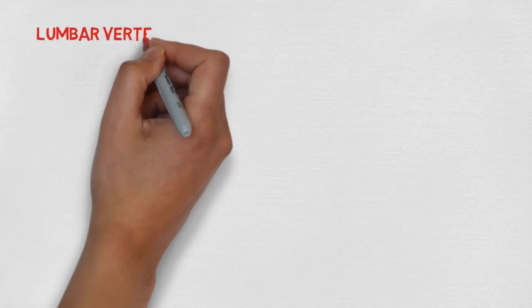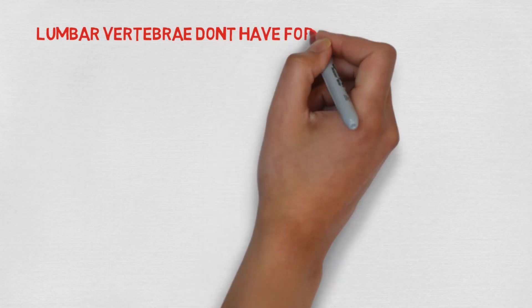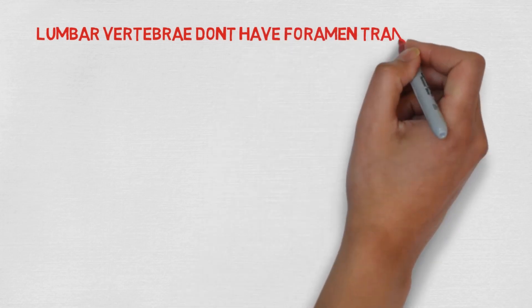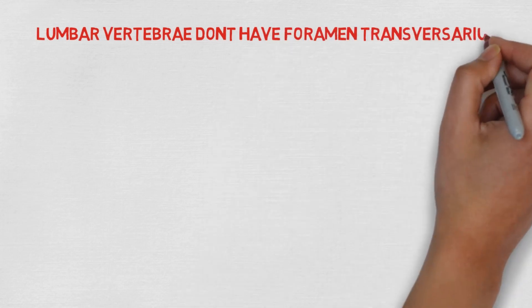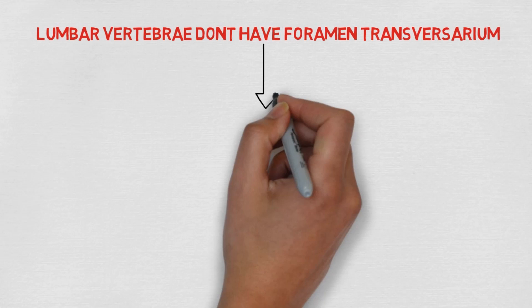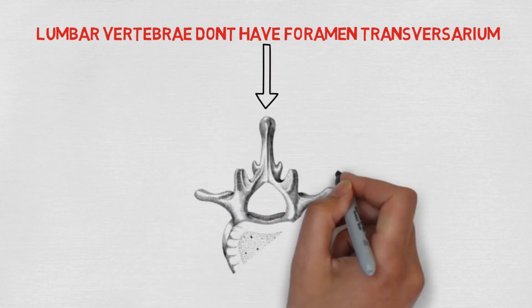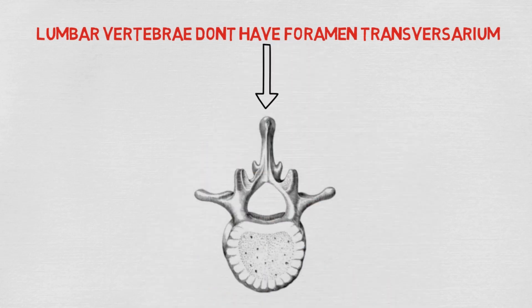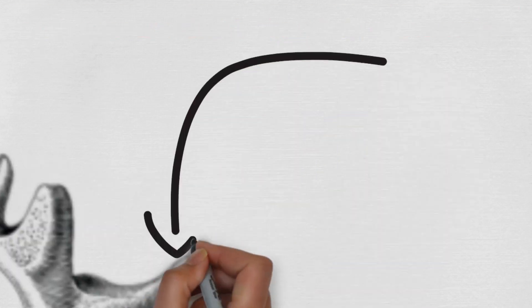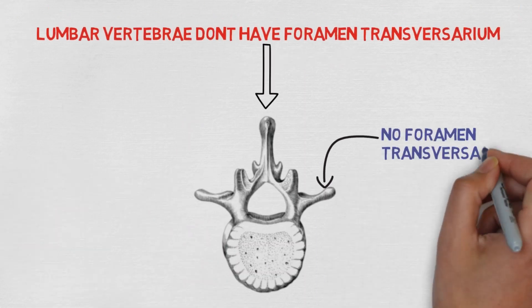First of all, lumbar vertebrae don't possess foramen transversarium. Let's see the transverse process to locate if we can find the foramen. By looking at this picture, we can easily say that there are no foramen transversarium present in lumbar vertebrae.